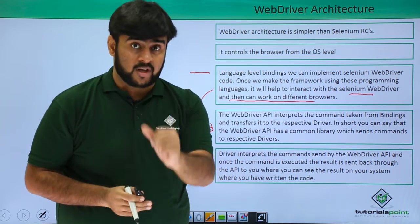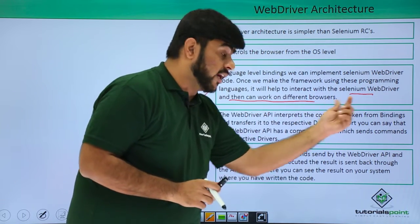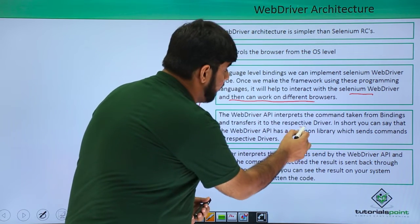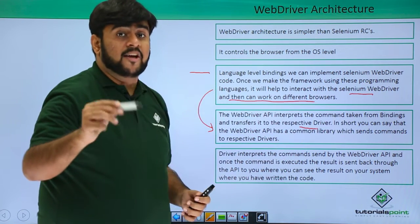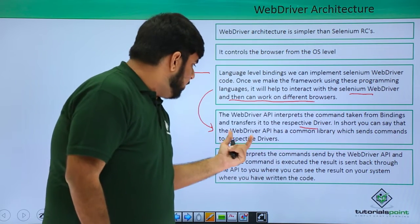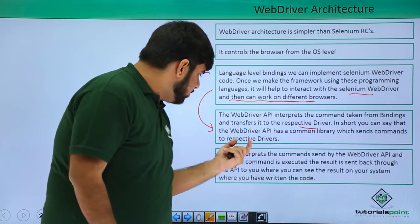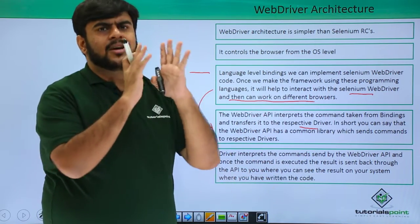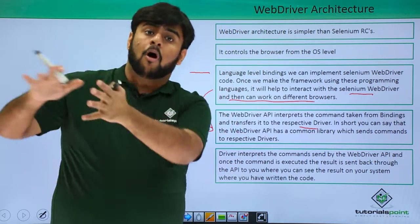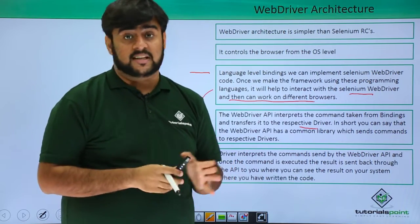The WebDriver API interprets the command taken from the bindings and transfers it to the respective driver — in this case the Firefox driver. In short, the WebDriver API is a common library which sends commands to the respective driver. Regardless of whether you are using Firefox, Chrome, or other browsers, the entire library remains the same — only the output differs.